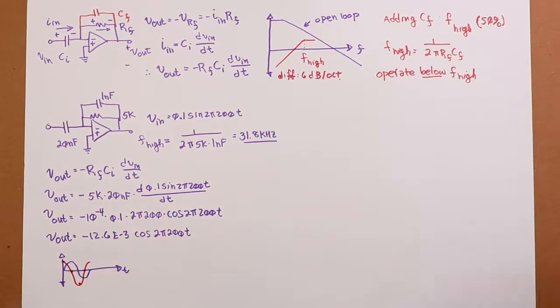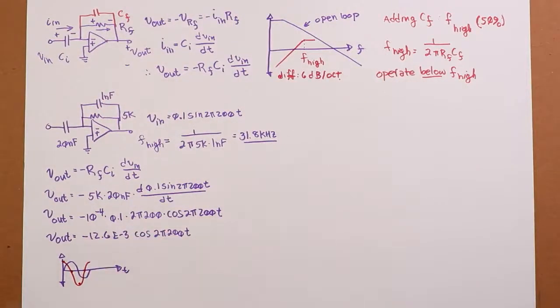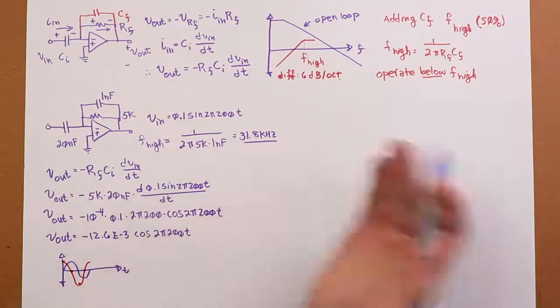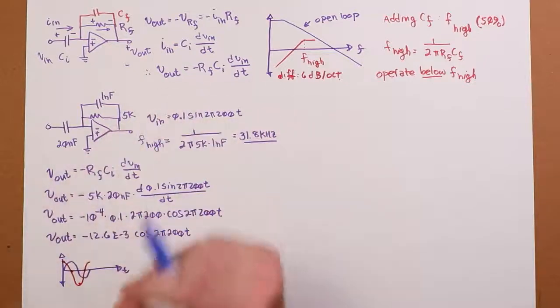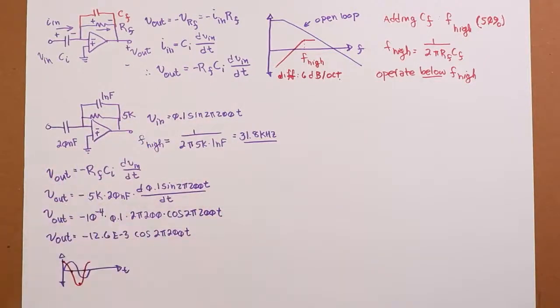We wind up with a negative because it's an inverting amplifier. If that was an issue with whatever computation we're doing, we could always run this through another inverting amplifier to get us back to the true phase.